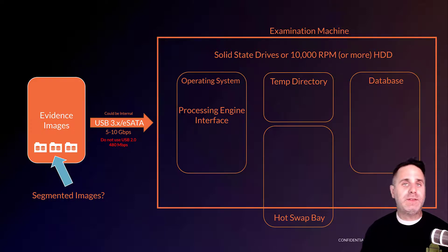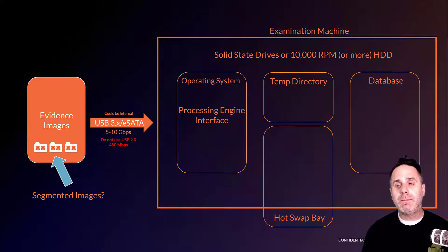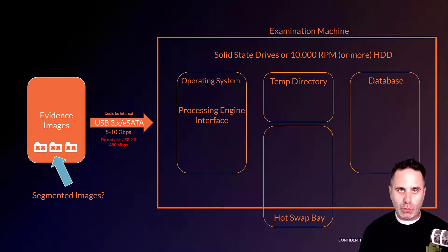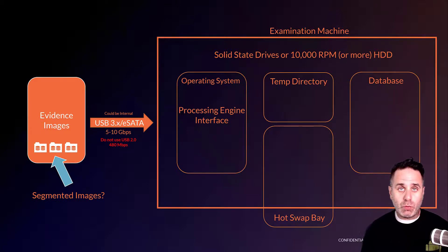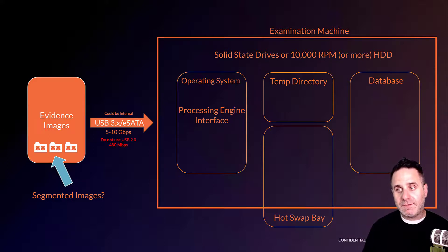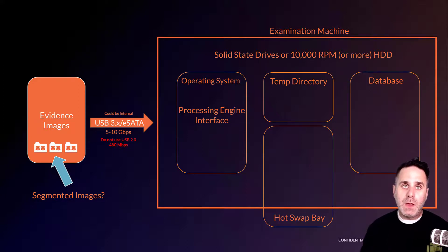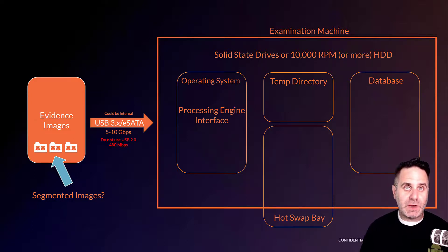If you have some of these components duplicated on the same disk, keep in mind that a disk can either read or write — it can't do both simultaneously. So if you're processing a case, the processor will access the evidence image, read the artifacts, process the metadata, and then write it to the database. If the database and the processing engine are on the same drive, it has to stop reading to write to the database. By putting the processing engine on one drive and the database on its own drive, they can operate simultaneously — one reading and processing while the other writes.